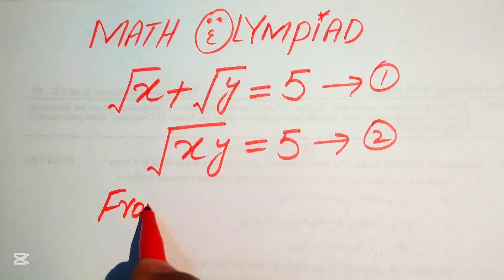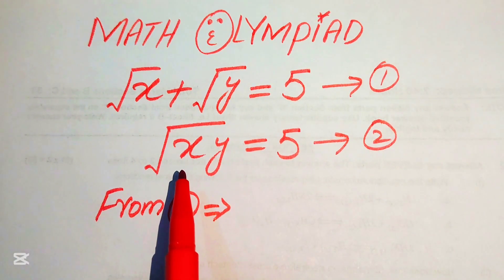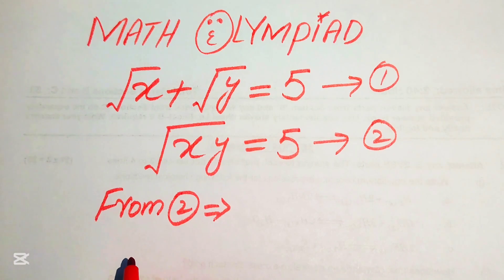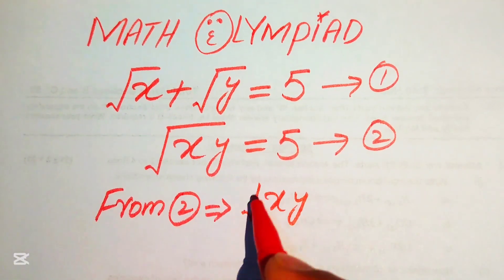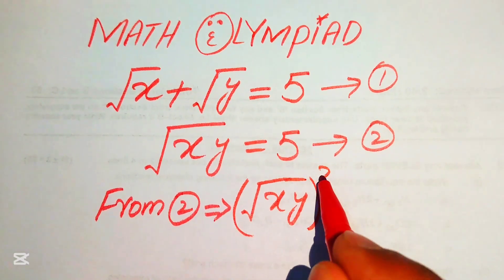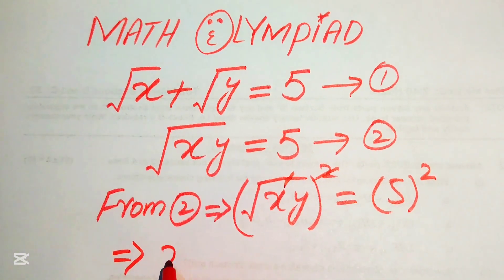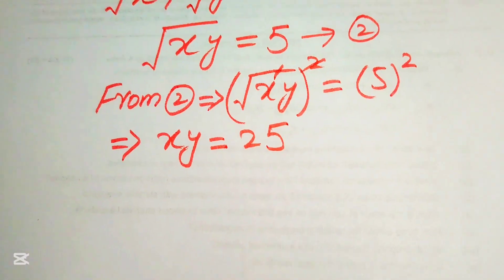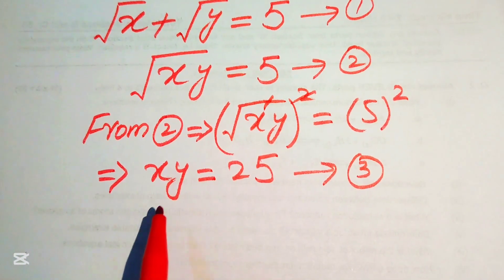First we focus on equation number 2. We eliminate all radical signs from both equations. We square both sides of equation number 2: square root of xy squared equals 5 squared. The square roots cancel and we get xy equals 25. We call this equation number 3.